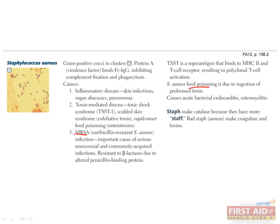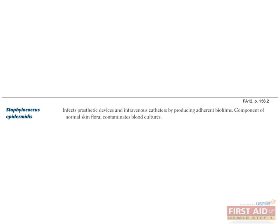Staph aureus is also a common cause of endocarditis and osteomyelitis. Staph epidermidis is our catalase-positive, coagulase-negative, gram-positive cocci. Remember that staph epidermidis is normal flora found on your skin — epidermis equals skin — and can infect any external devices that penetrate the skin. This is why we swab skin with alcohol wipes before collecting blood in the hospital, in an effort to kill staph epidermidis and prevent it from entering and contaminating the blood. If you see questions that state staph epidermidis was grown on blood culture, remember that this means the blood collection process was not done properly, rather than the patient having a staph epidermidis bacteremia.